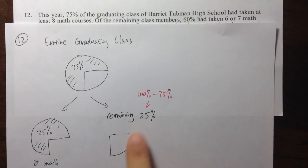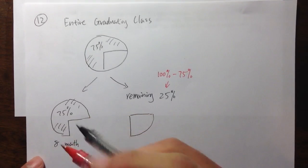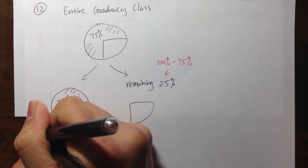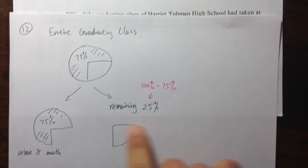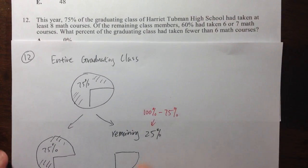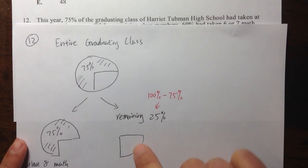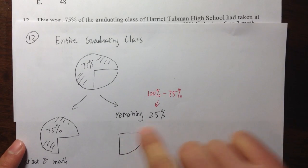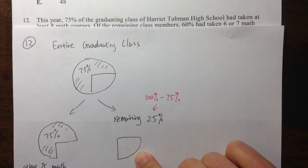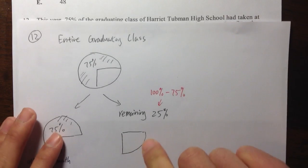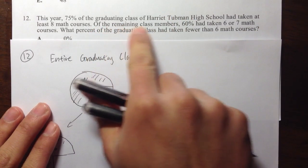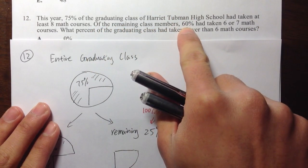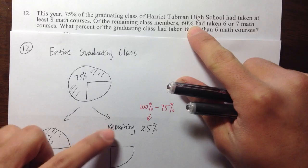So the remaining students, of course, this is at least, I should have put the word at least, eight math classes. So this percentage of students, they took less than eight math classes. But this 25% of the students, they took less than eight math classes. So of the remaining right here, and as we can see that it says, of the remaining class members,